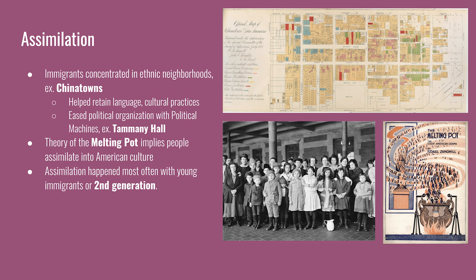The theory of the melting pot begins to develop in this time period, implying that people coming from other parts of the world into the United States would assimilate into American culture — metaphorically melting into the larger culture. This implies losing aspects of their identity while possibly adding some aspects of their previous culture to American society. The melting pot was the way people envisioned immigrant society for much of the 20th century. Today, other food metaphors are used in which different parts retain their unique characteristics — more like a stew, a salad, or a burrito bowl.